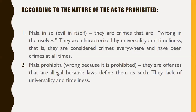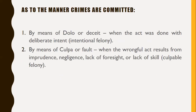As to the manner crimes are committed, we have dolo (deceit) and culpa (fault). Dolo means the act was done with deliberate intent — an intentional felony. Culpa or fault is when the wrongful act results from imprudence, negligence, lack of foresight, or lack of skill — this is called a culpable felony.